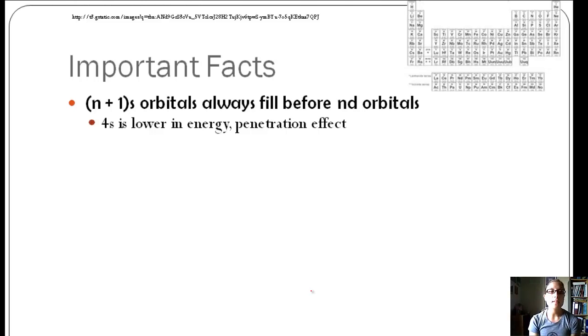Some other important facts. The n plus 1s orbital always fills before the n d orbital. This example is exactly what we just talked about. 4s filling before 3d. And then same thing, 5s filling before 4d, etc. This is because 4s is lower in energy, and so it's going to be filled first.